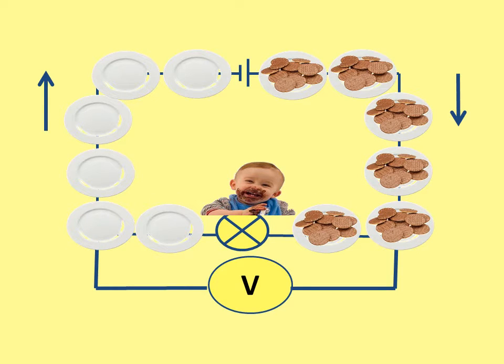This is what the voltmeter looks like using the circuit symbol. It must touch both sides of the component. It measures the energy of the electrons before, the energy after, and then tells you the difference. That is really important.